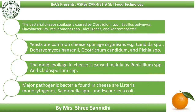Bacterial cheese spoilage is caused by Clostridium species, Bacillus polymyxa, Flavobacterium, Pseudomonas species, Alcaligenes, and Achromobacter. Yeasts commonly seen in spoiled cheese include Candida species, Debaryomyces hansenii, Geotrichum candidum, and Pichia species. Molds seen in spoiled cheese include Penicillium and Cladosporium species. Pathogenic bacteria such as Listeria monocytogenes, Salmonella species, and E. coli can also be present.